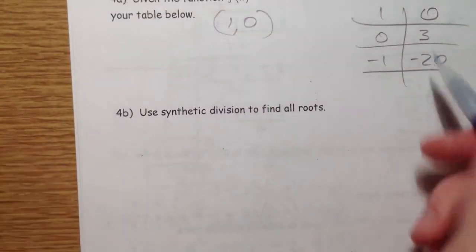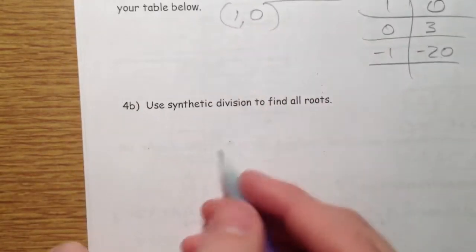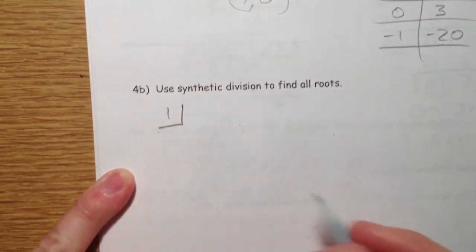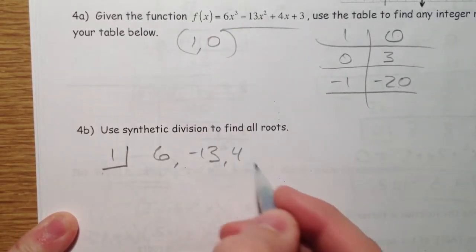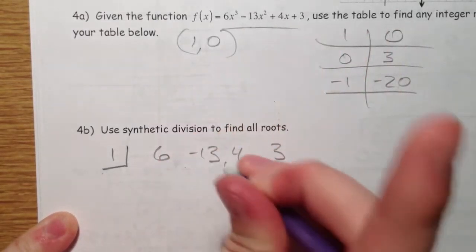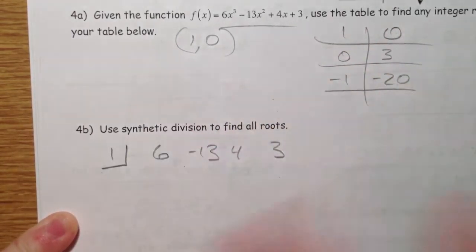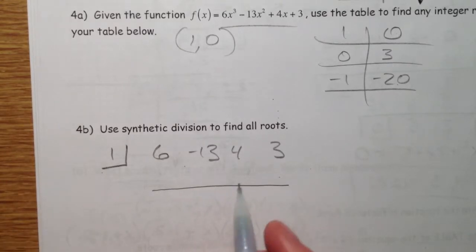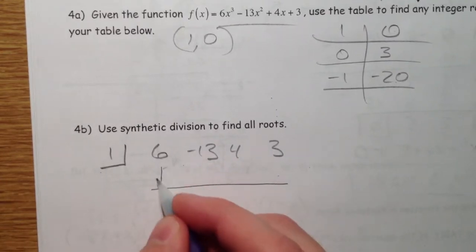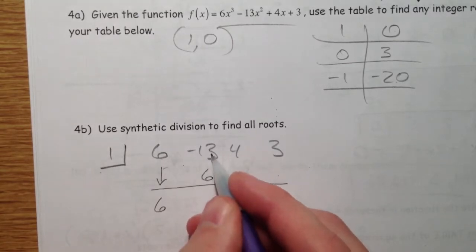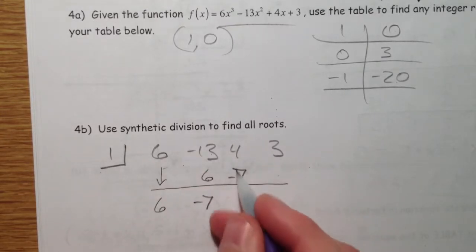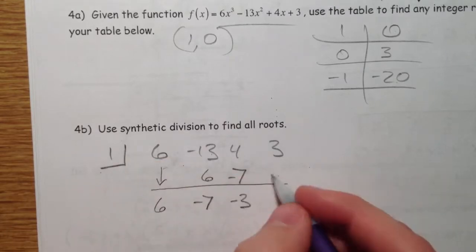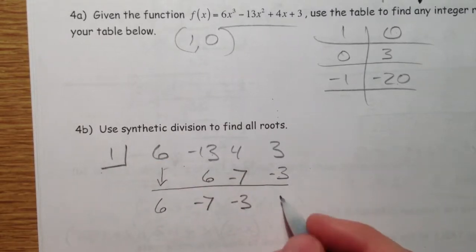So let's find all our roots using synthetic division. So if 1 is a root, I'm going to use our 6, negative 13, and 4, and 3. So drop down the 6, 6 times 1 is 6, we add negative 7. I multiply, I get negative 7. 4 minus 7 is negative 3, and I multiply negative 3 and I get 0. So 6x squared minus 7x minus 3.